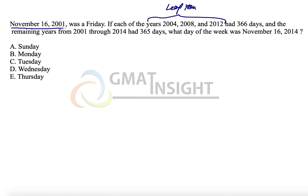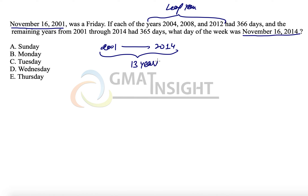We have to move from 2001 to 2014 while the date remains the same — November 16 to November 16. That means the total years we need to consider is 2001 to 2014, which equals 13 years. Among these 13 years, we have three leap years which have 366 days each, while the other 10 years have 365 days each.